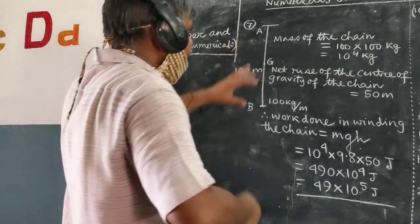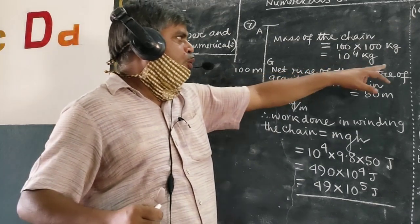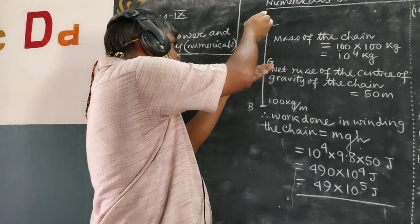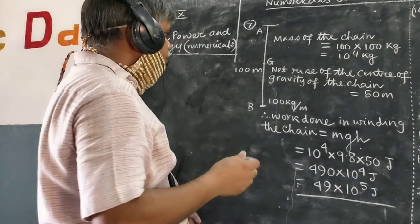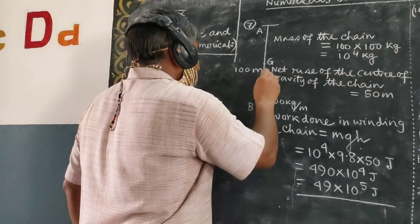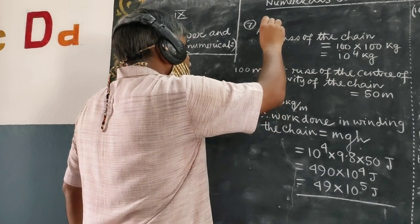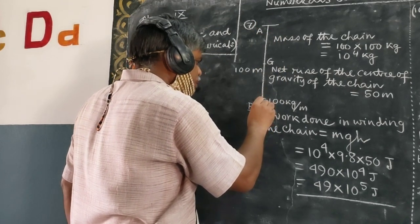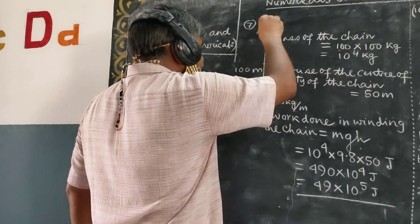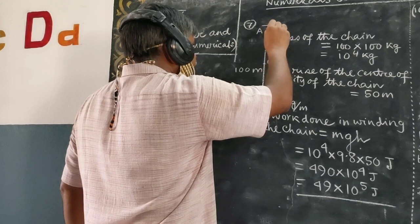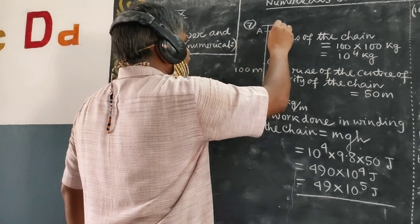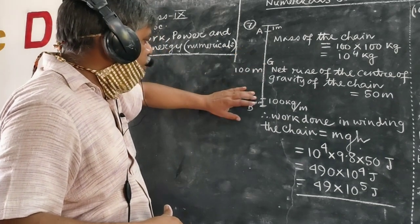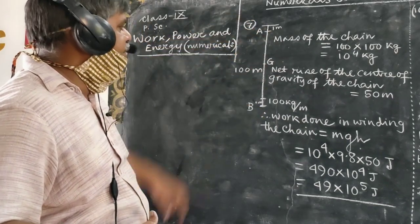So the total mass of the chain is 100 into 100 kg, that is 10 to the power of 4 kg. The chain is being taken up to this point. Point B is suffering a rise of 100 meters, but the top point is suffering a rise of 0 meters. If I take a point 1 meter above the end point, it is suffering a rise of 99 meters, and the point 1 meter below the point of suspension is suffering a rise of 1 meter. In this way, we can consider the whole chain as suffering a rise through 50 meters.